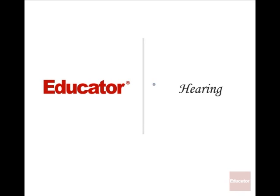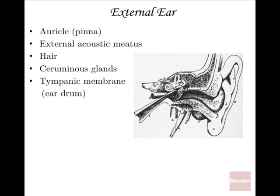Welcome back to Educator.com. This is the lesson on hearing. When we look at the ear, we want to start on the outermost portion — the most superficial, most lateral part. In anatomy and physiology, when you say 'the ear,' you're not just talking about the visible part; you're talking about all that stuff on the inside too. The outer part with that lobe — that typical look we see on human beings — is actually called the auricle.